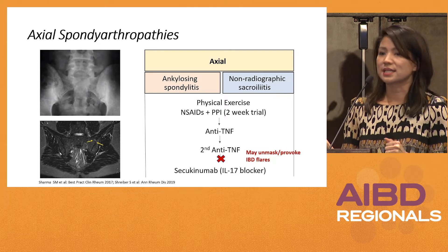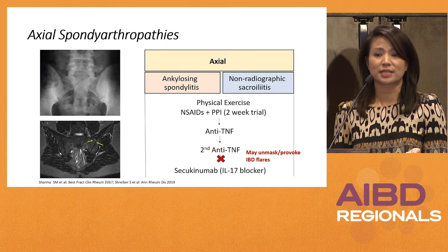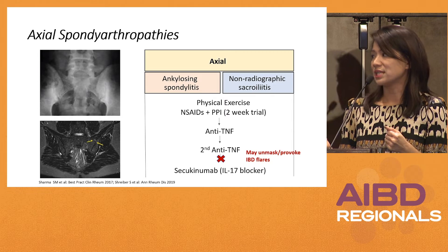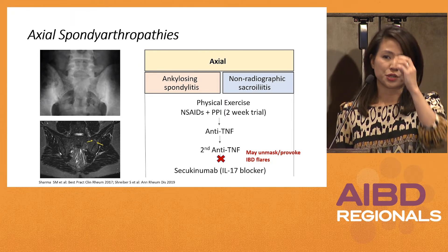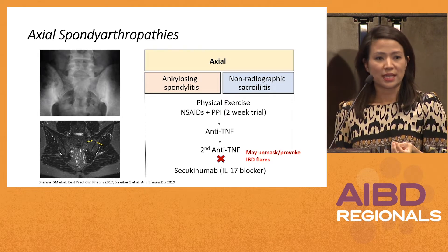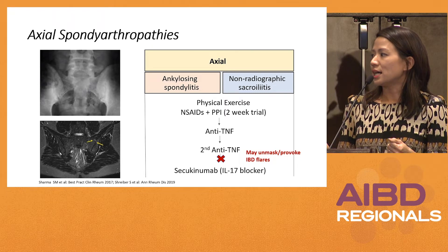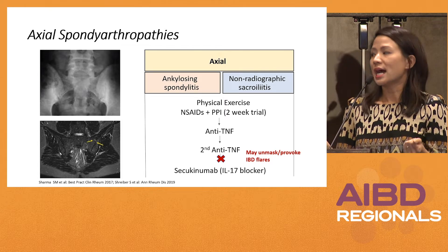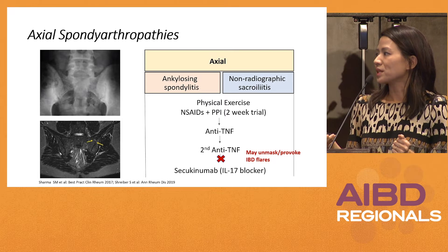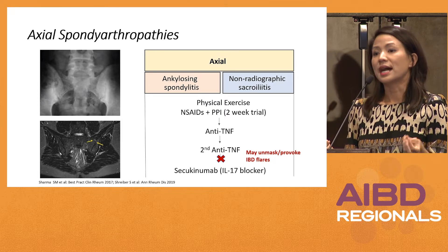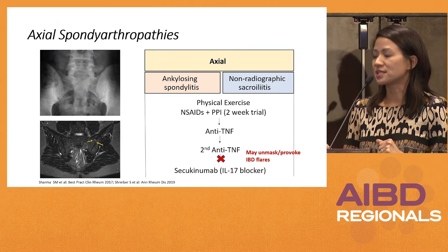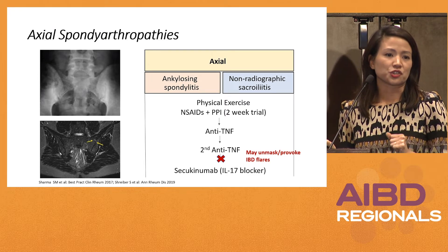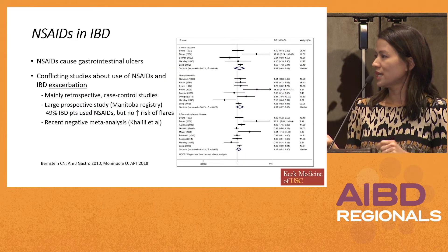Important to note: if patients do not respond to an anti-TNF, second-line for ankylosing spondylitis is an IL-17 blocker called secukinumab. It's important to know that this class of medication should not be used in our IBD patients, because there have been cases in rheumatology clinical trials of new IBD being unmasked or exacerbated. In the IBD literature, this drug was actually studied for Crohn's disease and there were enough cases of exacerbations that the studies were stopped early.